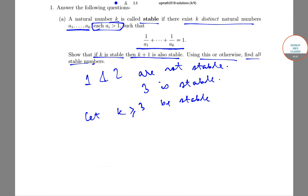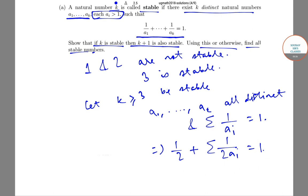Now let k ≥ 3 be stable. Hence, there are a₁ through aₖ, all distinct, with summation 1/aᵢ = 1. This implies that 1/2 + summation 1/(2aᵢ) = 1. Therefore, all numbers except 2 are stable.